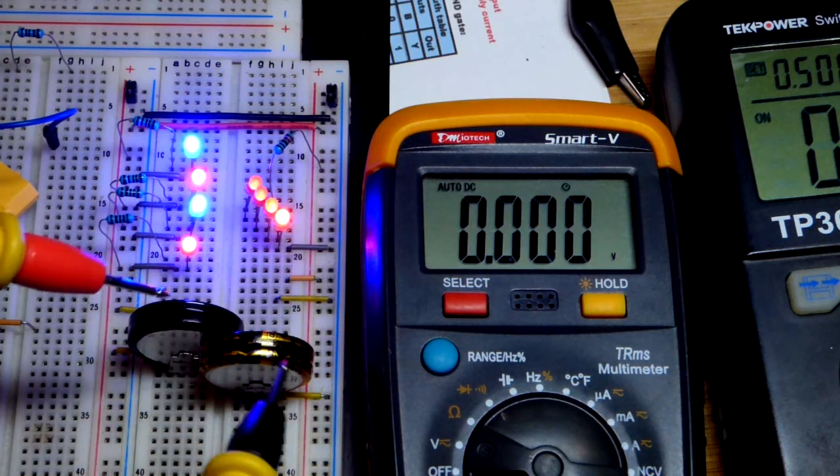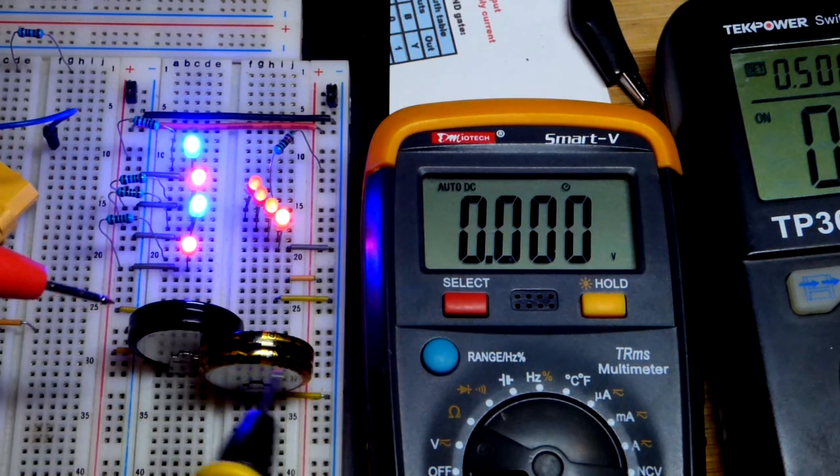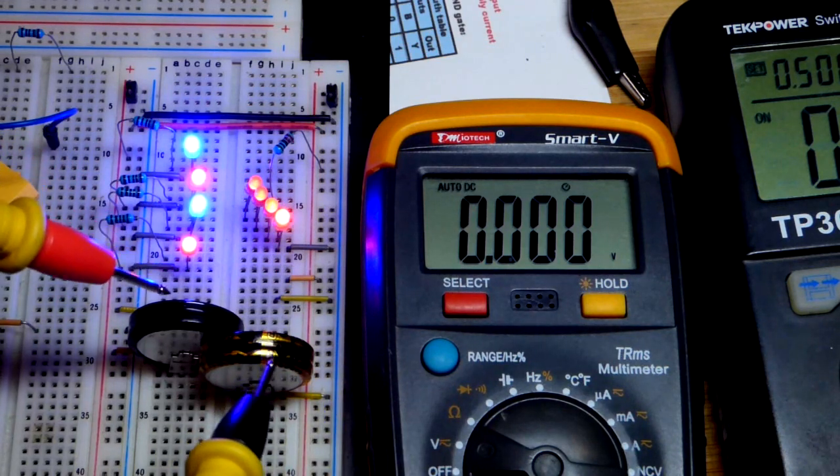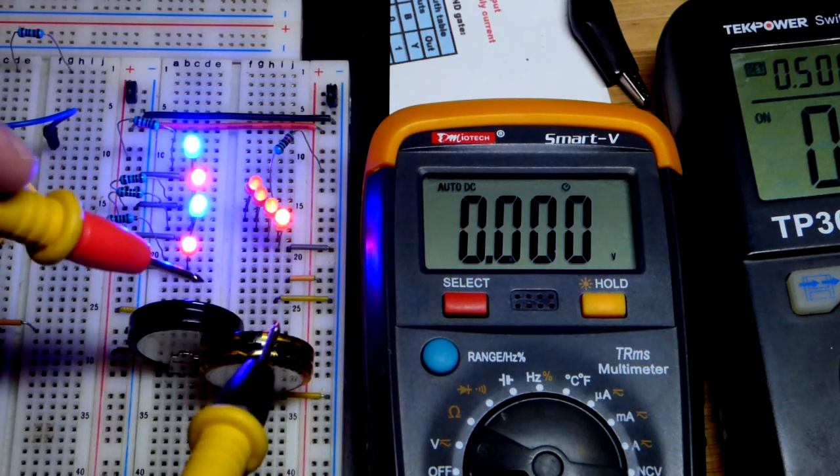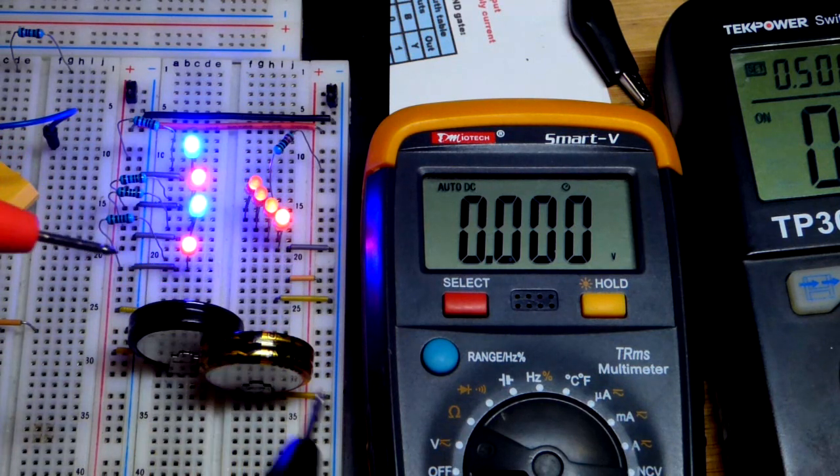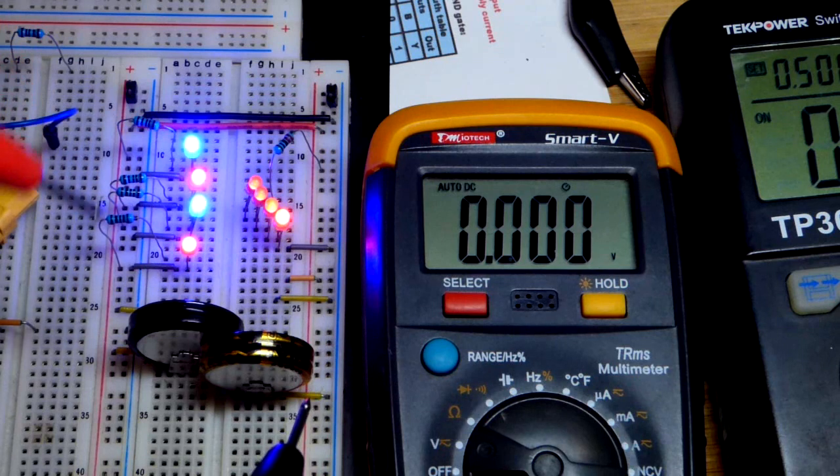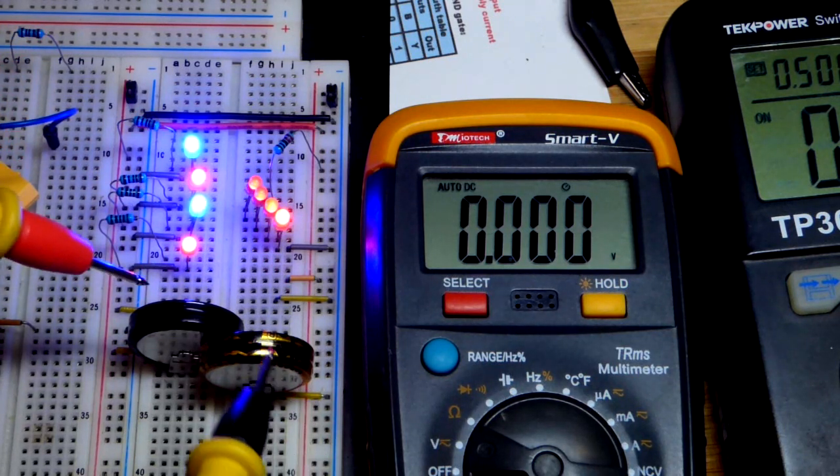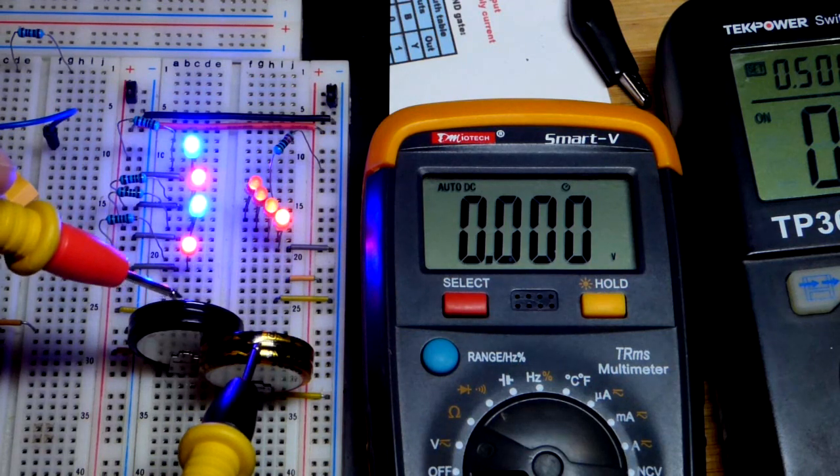And there's voltage doubler circuits out there. You do lose a little bit of voltage in the process going through diodes, but you get close to double the voltage with regular capacitors. You need a way to alternate high and low to them. So you could use like a 555 timer or something. I'll probably do that in a video coming up.